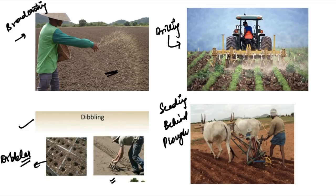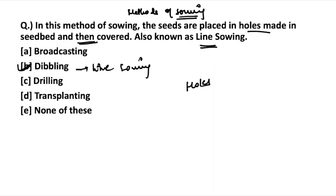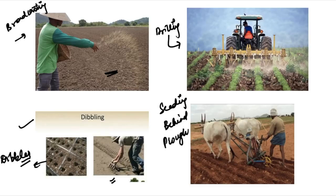Drilling involves dropping seeds in the furrow line — seeds are dropped in a continuous flow into the furrow lines and then covered with soil. Another method is seeding behind the plow: a man drops the seed in the furrow behind the plow, using a bulakkar, and the seeds are placed in the plowed land. These are the different methods of sowing, and a question on broadcasting appeared in a previous year paper, so they are exam-relevant.